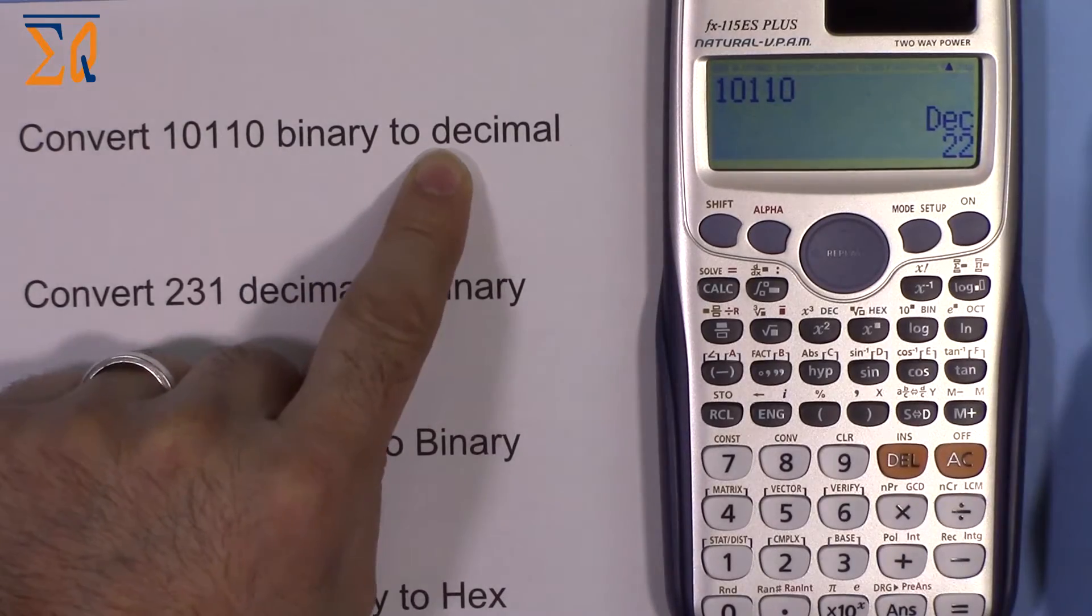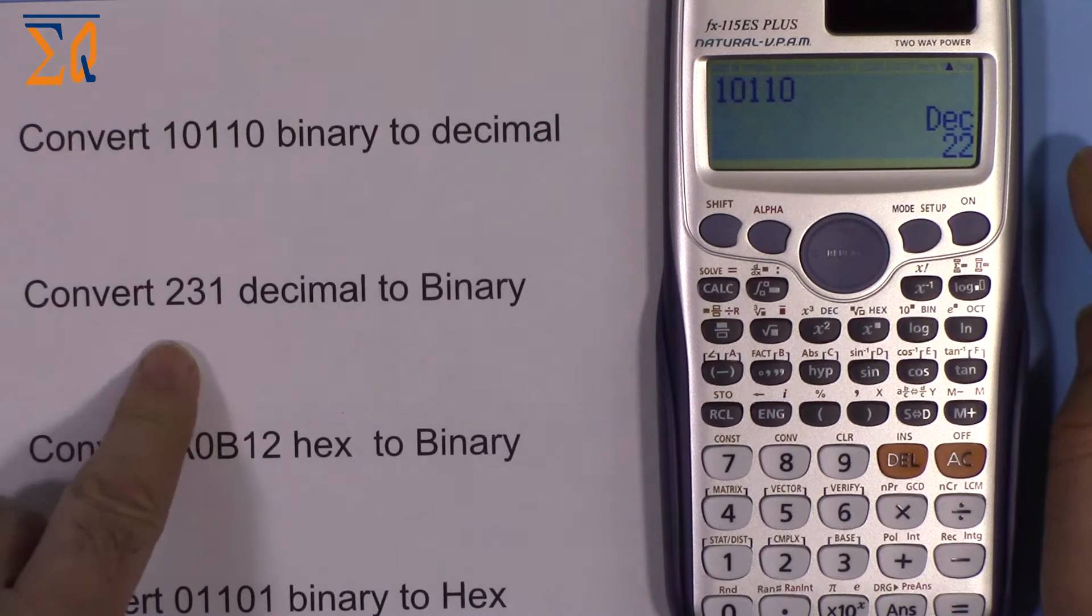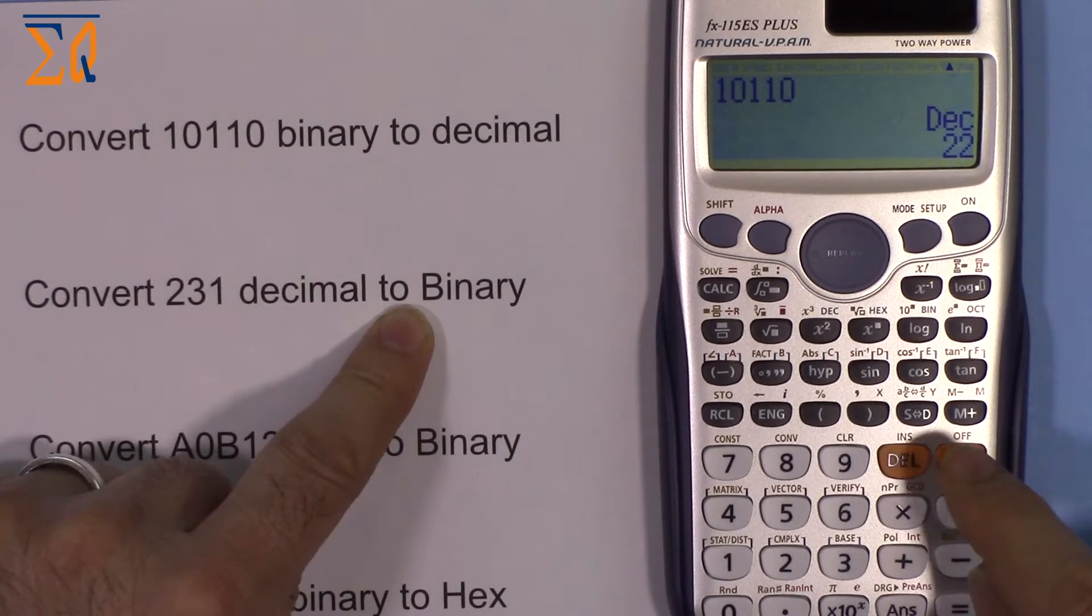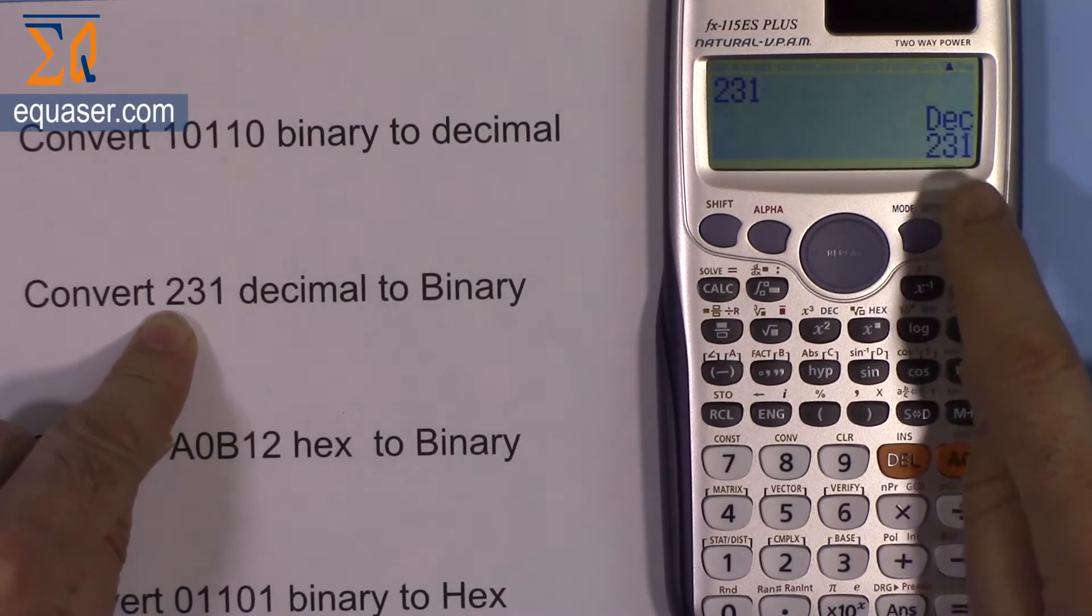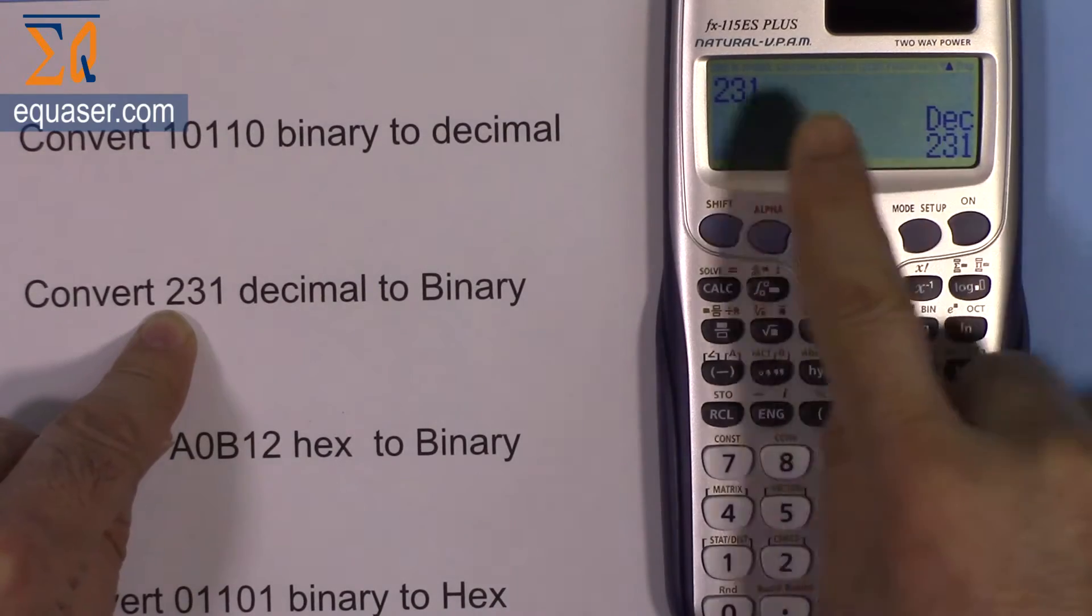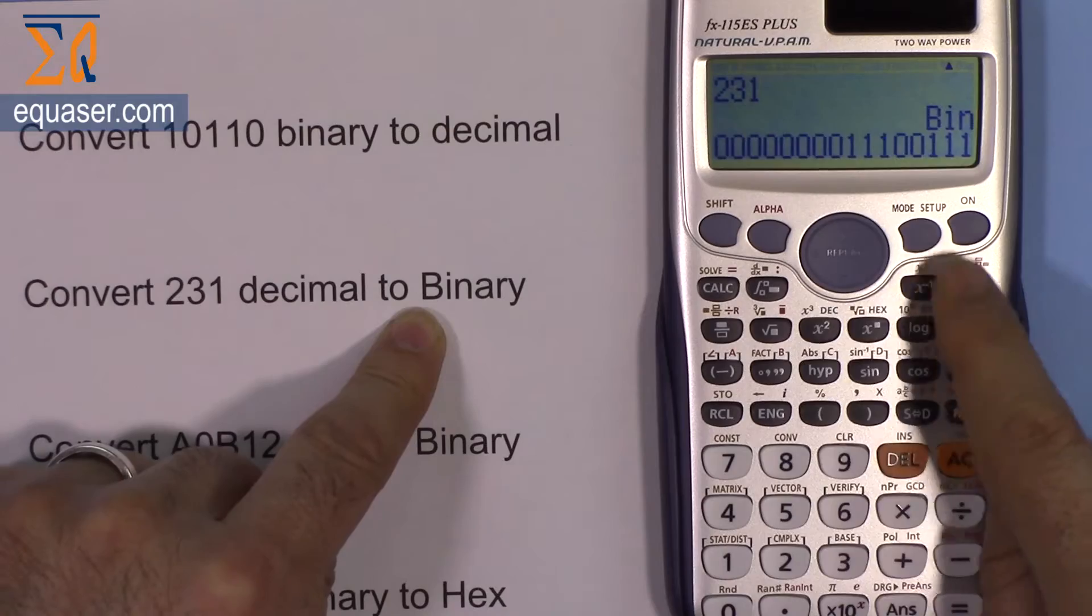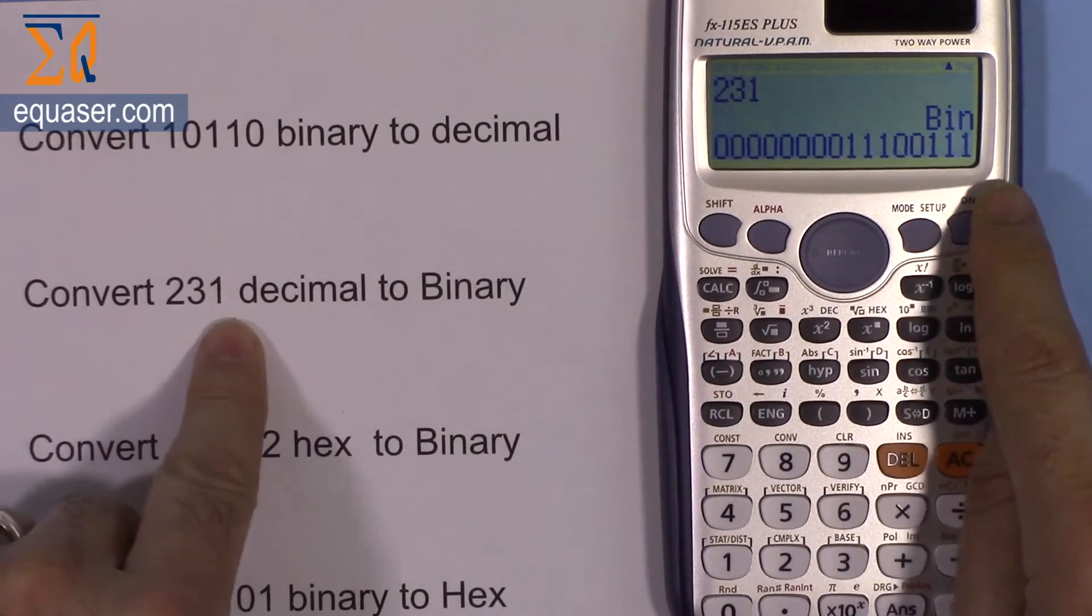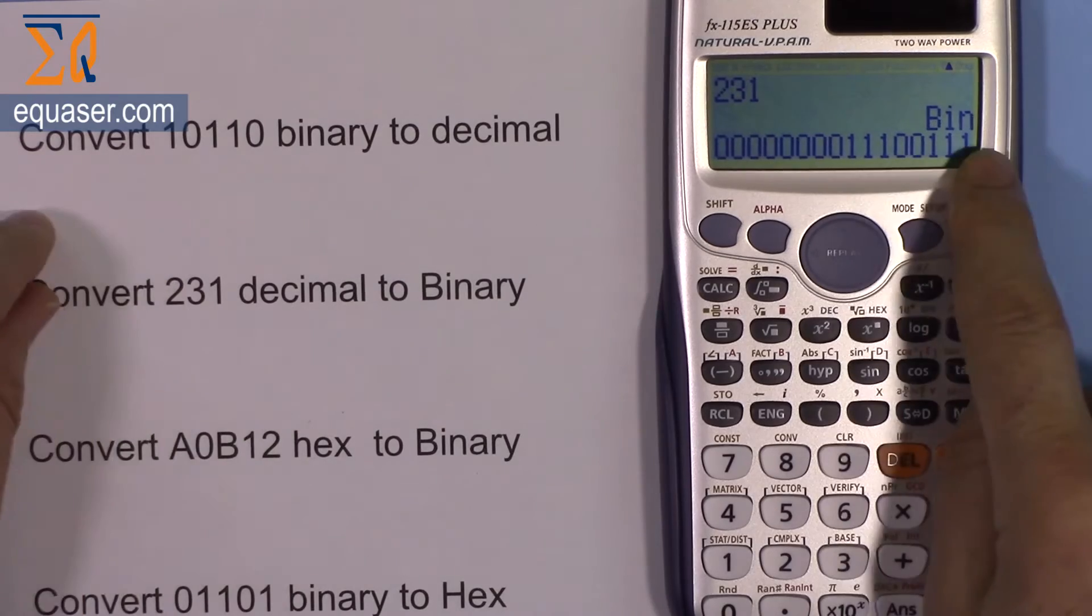The value is 22 in decimal. To convert 231 decimal to binary, I'm pressing AC for all clear, then 2, 3, 1, and press equal sign. To convert to binary just press BIN. This is 231 in binary: triple 1, triple 1 with two zeros in the middle.